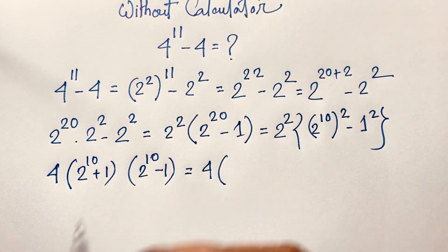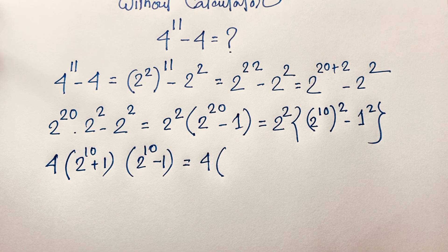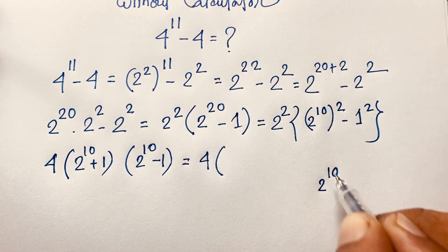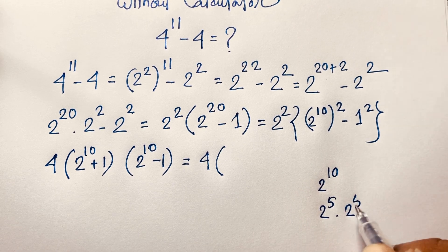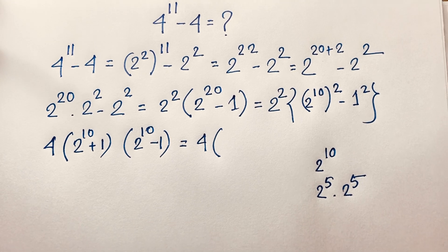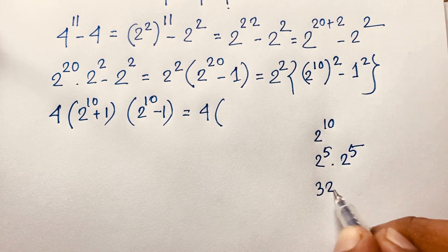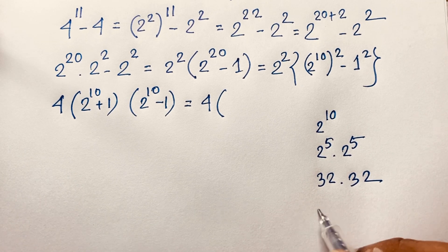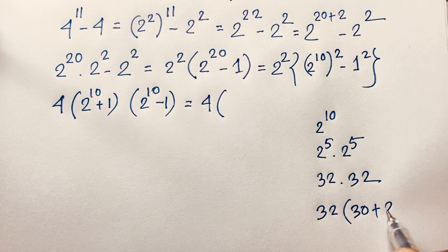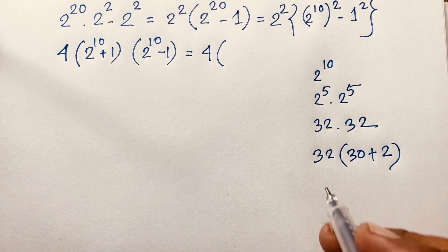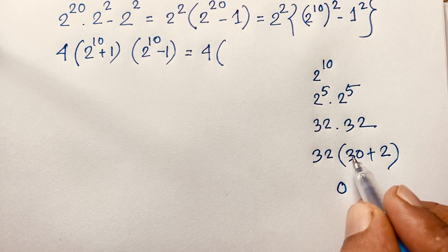Now I need to find 2 to the power 10. I can write it as 2 to the power 5 times 2 to the power 5, which equals 2 to the power 10. And 2 to the power 5 equals 32. So 2 to the power 10 equals 32 times 32. I write 32 as 30 plus 2.